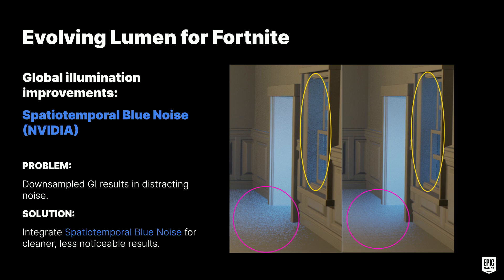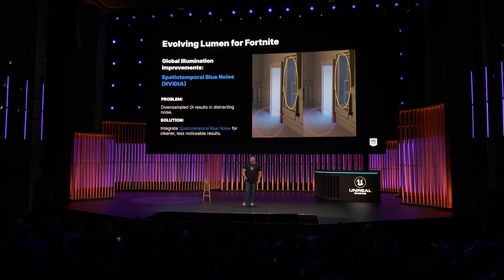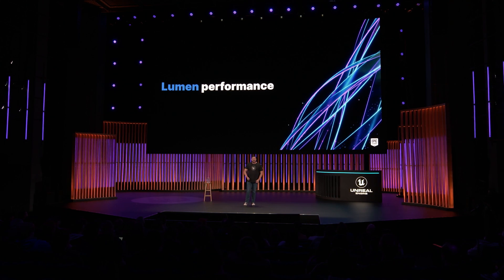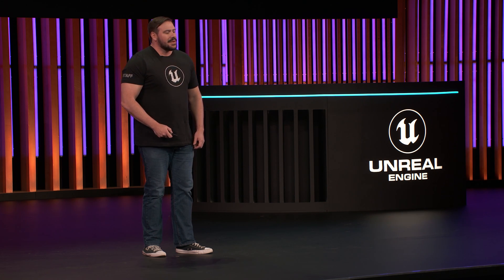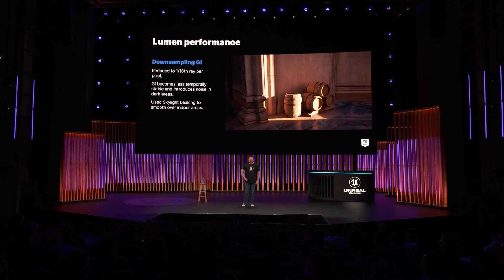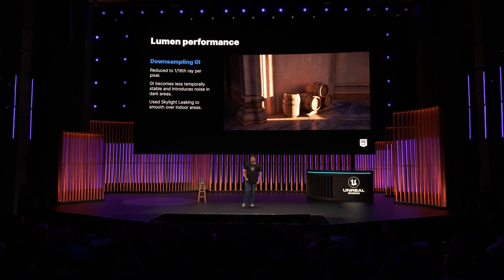We also made improvements to the noise of our global illumination. Because Lumen GI downsamples heavily to fit into budget, the resulting noise can be more noticeable and distracting. We were able to reduce noise greatly by integrating NVIDIA's spatiotemporal blue noise — a technique that pre-optimizes noise patterns to cancel out quickly when accumulated over multiple frames — giving much cleaner indirect lighting without requiring additional rays. For performance, Lumen GI scales quality down for 60 Hz by heavily downsampling, down to 1/16th of a ray per pixel. This tends to be less temporally stable and can introduce noise in darker areas.